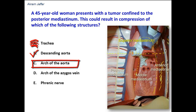Arch of the aorta: as I have just mentioned, the arch of the aorta is a structure located in the superior mediastinum and not in the posterior. Its continuation, the descending aorta, is located in the posterior mediastinum.